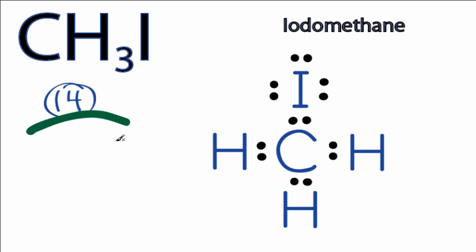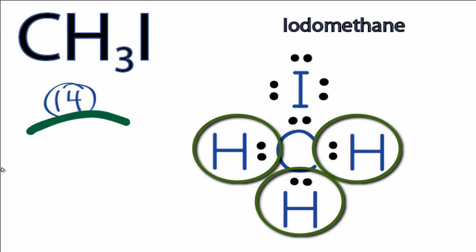So at this point, we've used all 14 valence electrons, and if we look at the hydrogens, they each have 2, so their octets are full.